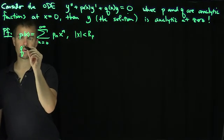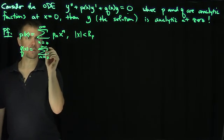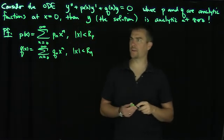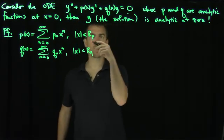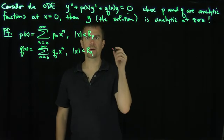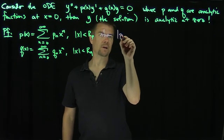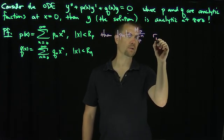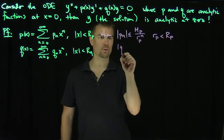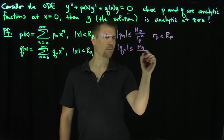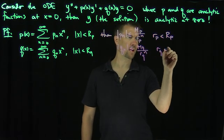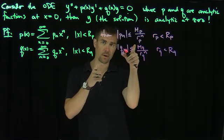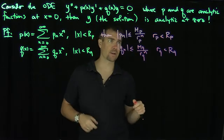And similarly for q: q of x has the representation as the sum n goes from 0 to infinity of q-sub-n times x to the n, where |x| is less than R-sub-q. We know by the Taylor expansion that for any r strictly less than these radii, the coefficients p-sub-n are less than or equal to a number M-sub-p over r-sub-p to the power n, where r-sub-p is strictly less than R-sub-p. Likewise, q-sub-n is less than or equal to M-sub-q over r-sub-q to the n, where r-sub-q is less than R-sub-q. In other words, if I give you a radius of convergence, the coefficients of that Taylor expansion have to be bounded by an exponential decay for any parameter strictly less than that radius of convergence.